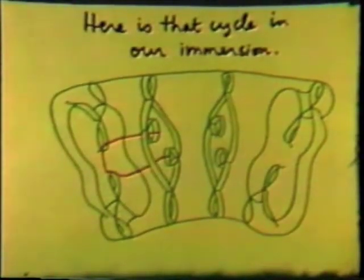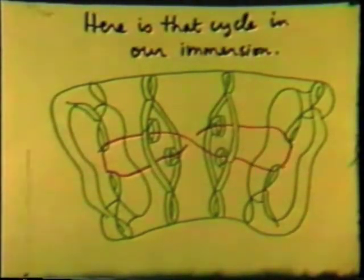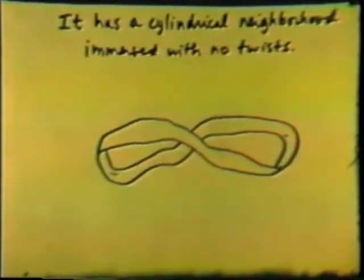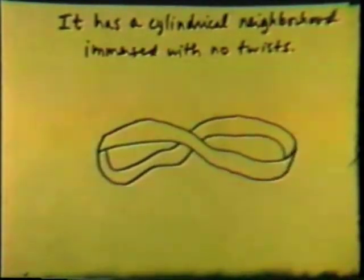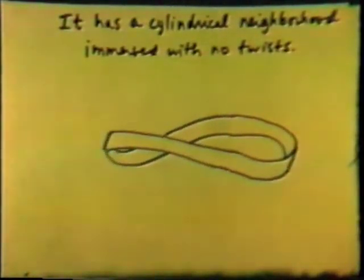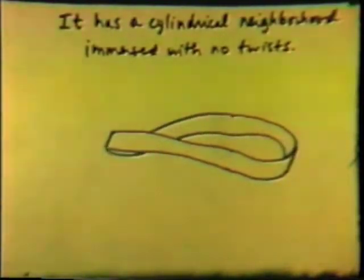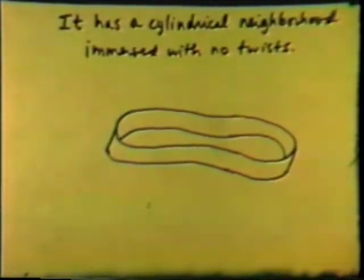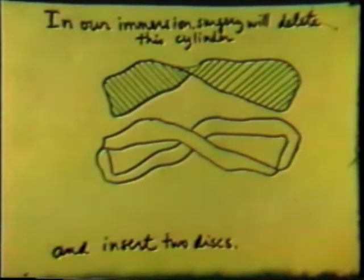Here is that cycle in our immersion. It has a cylindrical neighborhood immersed with no twists. Here is the neighborhood. We straighten it out to show that it is in fact regularly homotopic to a standard cylinder. In our immersion, surgery on a cycle with an untwisted cylindrical neighborhood may be summarized by: delete cylinder, insert discs. Surgery will delete this cylinder and insert two discs, one above, one below.